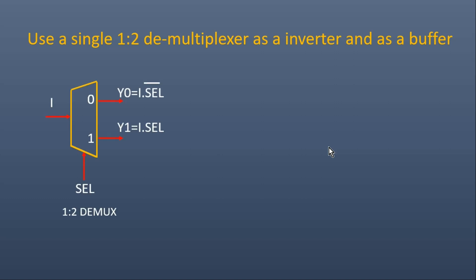This is the pin diagram of the demultiplexer. This is the select line, the input I, and it has two outputs: y0 and y1. y0 will be equal to I multiplied by select-bar. When select is 0, I will be passed to y0. When select is 1, I will be passed to y1. So y1 is equal to I multiplied by select. From here we can easily find out how to convert a 1×2 demultiplexer into an inverter and a buffer.